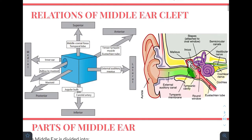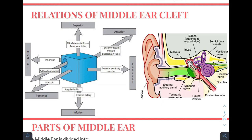Moving on to the relations of the middle ear cleft: superiorly it is related to the middle cranial fossa and the temporal lobe; inferiorly it is separated from the jugular bulb and the carotid artery; laterally the tympanic membrane separates it from the external auditory meatus; medially it is related to the inner ear; anteriorly it has openings related to the tensor tympani muscle and the eustachian tube; and posteriorly it communicates with the mastoid air cell system via the aditus to the mastoid.